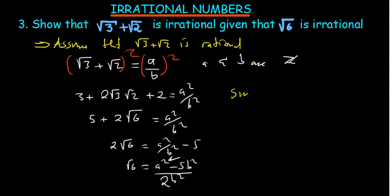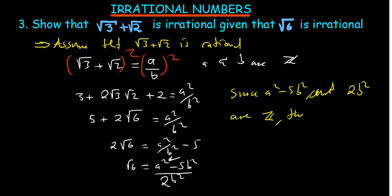Since A squared minus 5B squared and 2B squared are integers, the fraction is rational. But a rational number cannot equal an irrational number. Therefore root 3 plus root 2 is not rational — it is irrational.